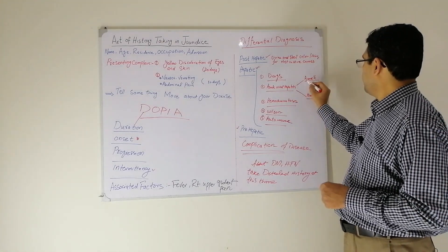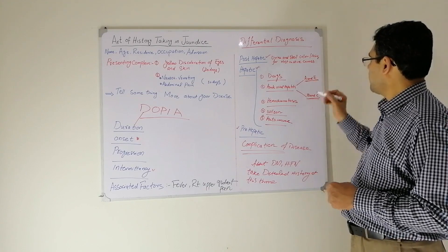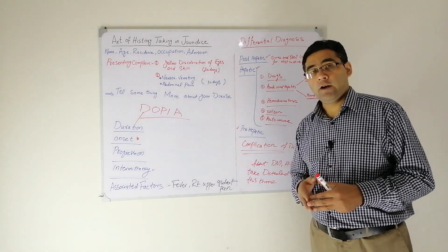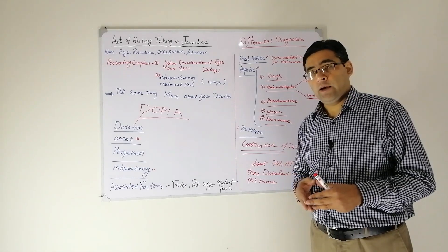Then comes acute viral hepatitis. I have divided them into two. In case of hepatitis A and E, you will ask the patient which type of water you are using at home for drinking and if there is any other family member having the same illness.